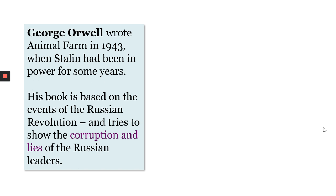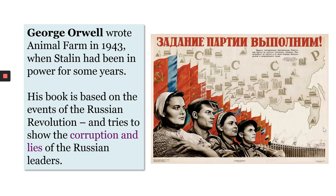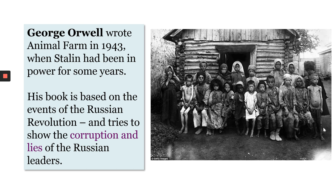This leads us to George Orwell, the writer of Animal Farm. He wrote Animal Farm in 1943, when Stalin was in power and had been for some years. So Orwell is writing about things which are actually happening while he writes the book. His book is based on the real events of the Russian Revolution and tries to show the corruption and the lies of the Russian leaders. The uprising of the animals that Old Major suggests in chapter one is a mirror of the reasons for the actual Russian Revolution in 1917. What Orwell is trying to show us is that while the new communist regime presented itself to the world as a huge success — shown through the poster on the right, showing prosperous Russians all working equally together — in reality the country was enduring a lot of suffering because of the corruption of its leaders, as shown in a photo from the mid-1930s during a great famine in Russia, which Russia tried to hide from the rest of the world.